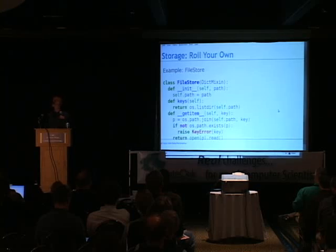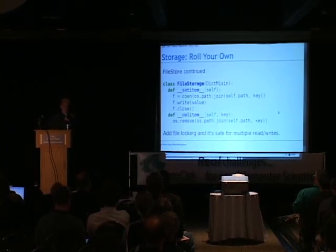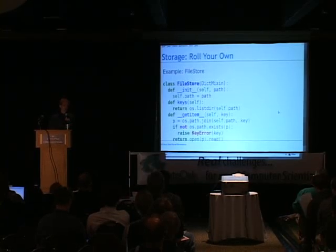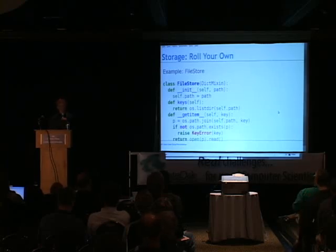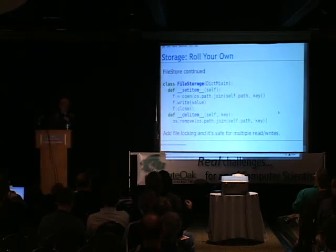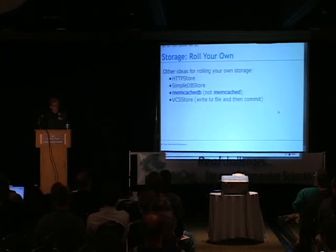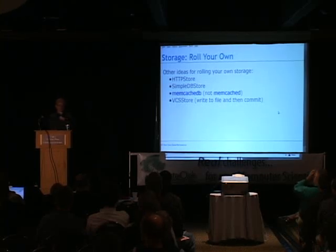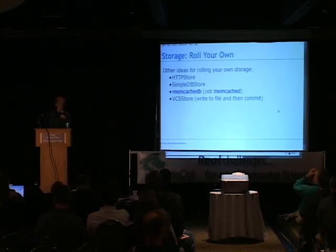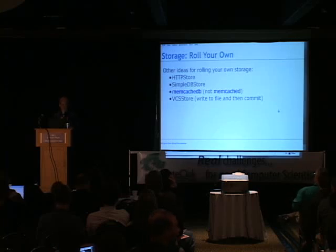Here's an example of how to use it — a file store. We pass in a path and it stores keys as file names and values as the data in the file. By defining keys, __getitem__, __setitem__, and __delitem__, we've got a dictionary that will store things in files. We raise a KeyError if the path doesn't exist just to keep the mapping interface intact.